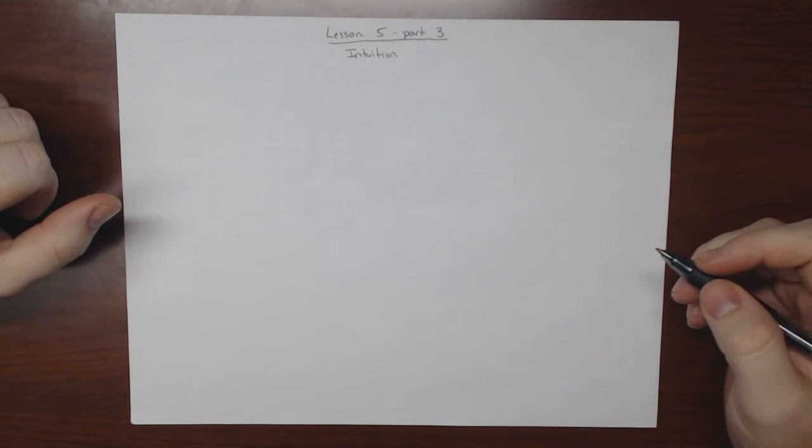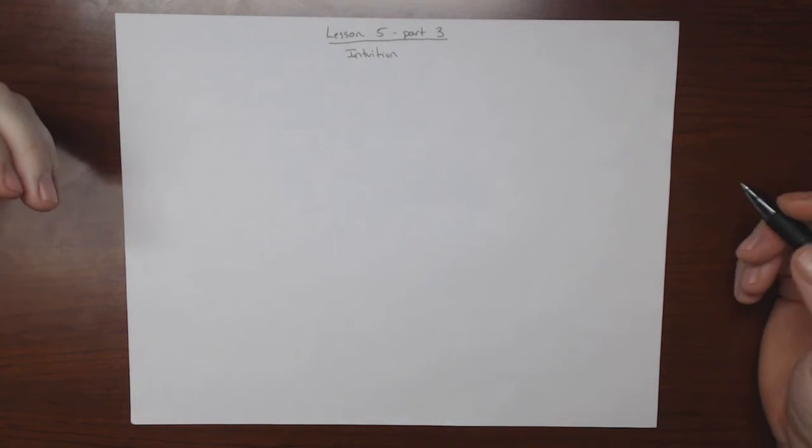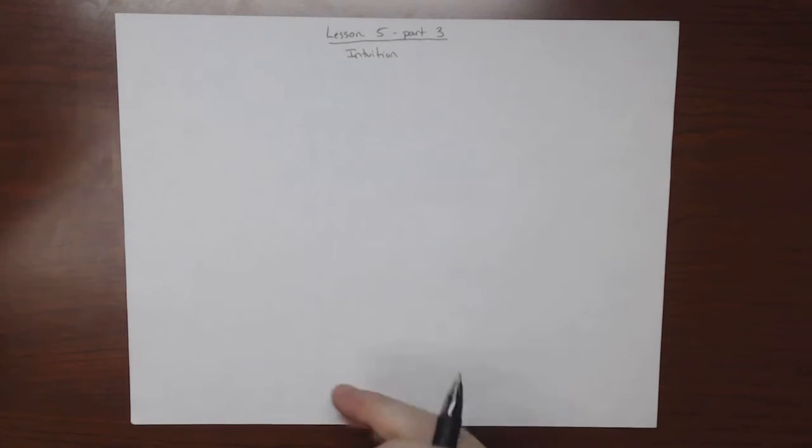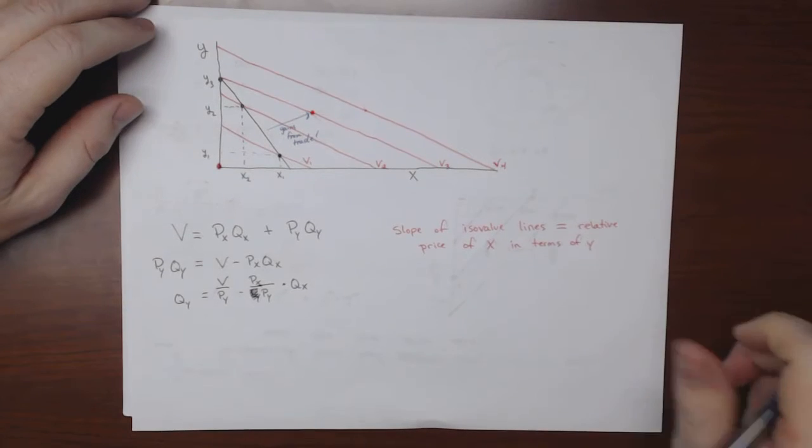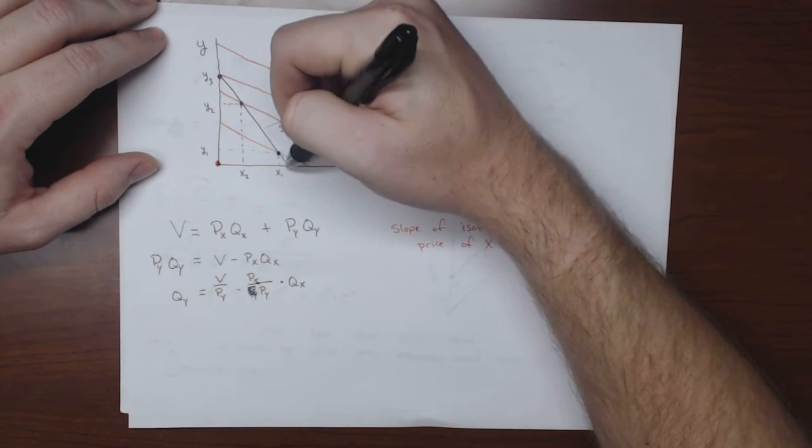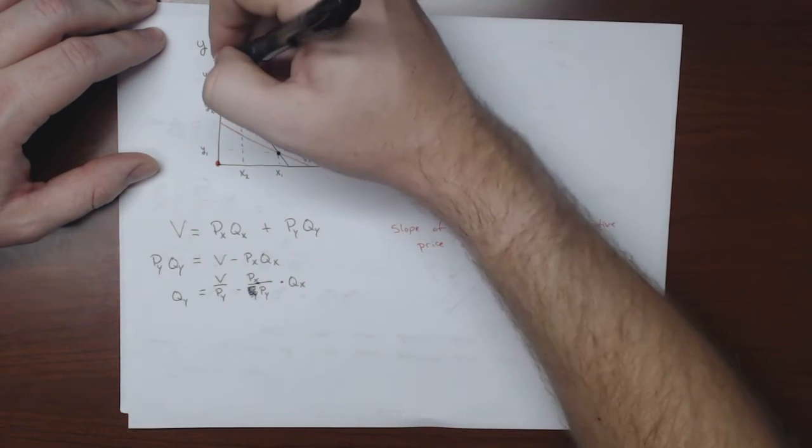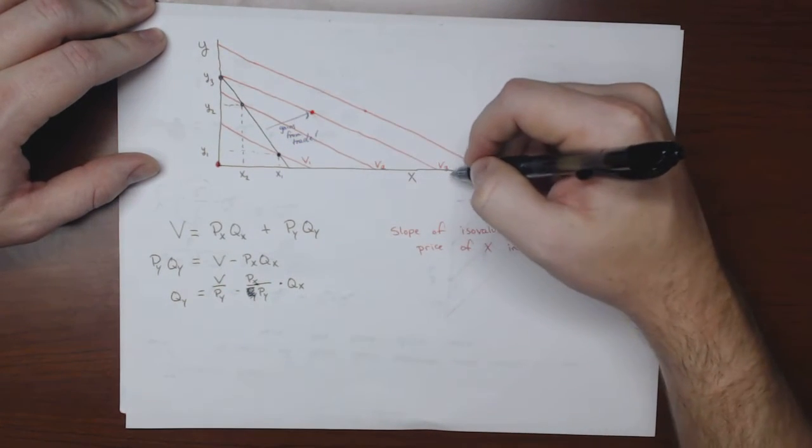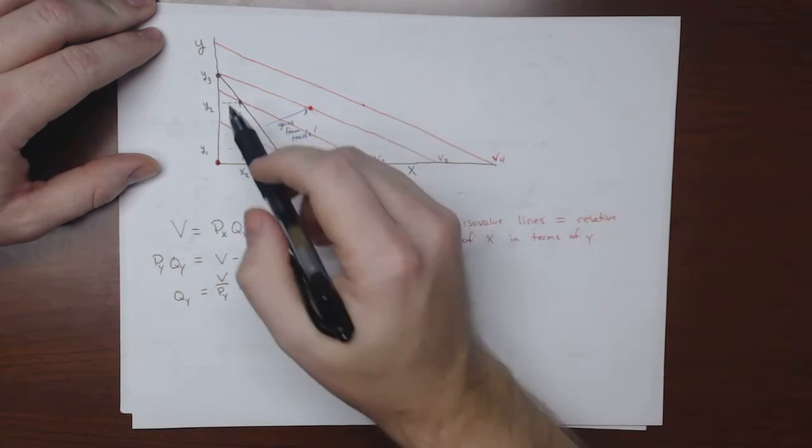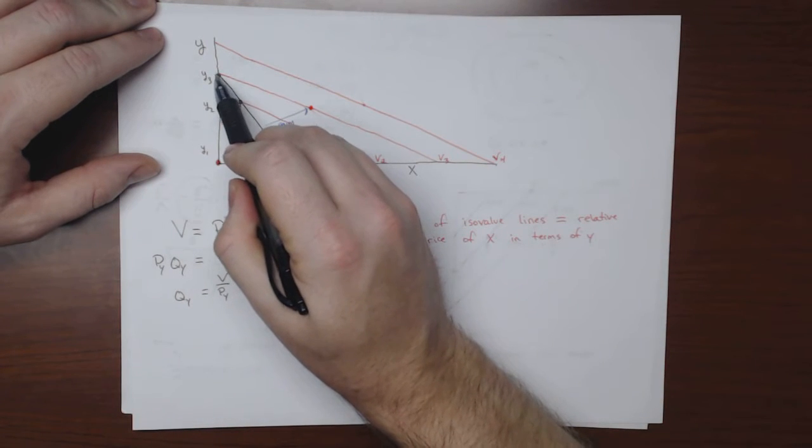So the intuition behind what we've been talking about should be somewhat obvious. If you think about what we just did, we said that if the slope of the PPF curve is steeper than the slope of the iso value curve, then you will maximize your value by producing all good y.